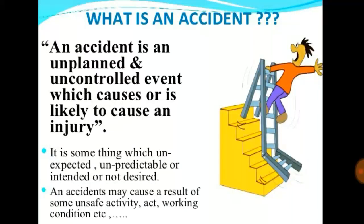Next, what is an accident? An accident is an unpleasant and uncontrolled event which causes or is likely to cause an injury. It is something unexpected, unpredictable, unintended, or not desired at all. An accident may result from some unsafe activity, act, or working condition, so we must be increasingly careful to prevent accidents.